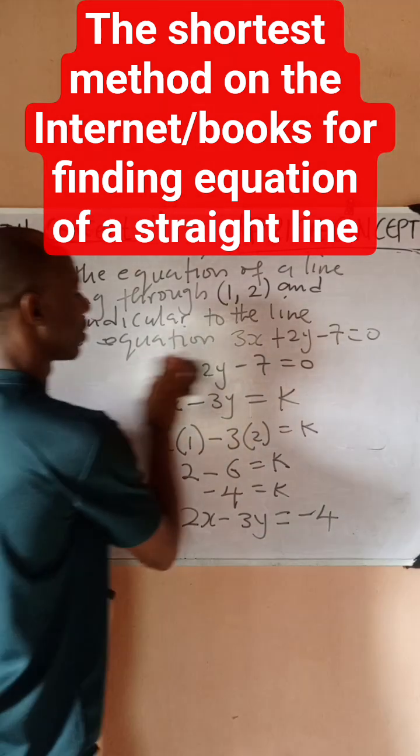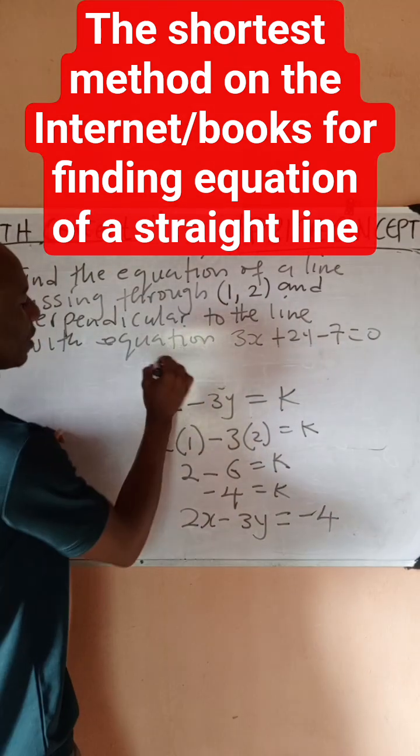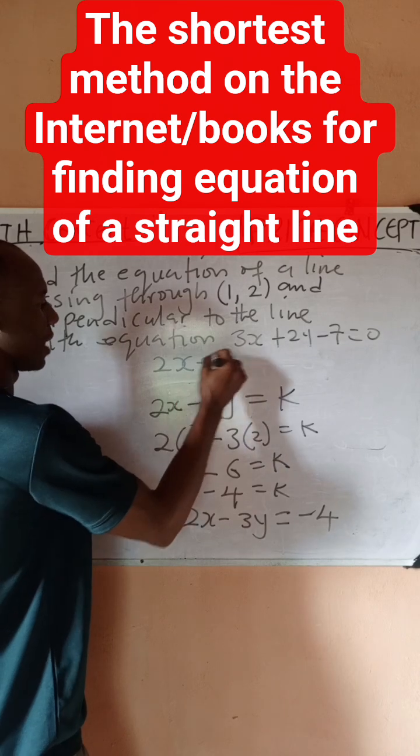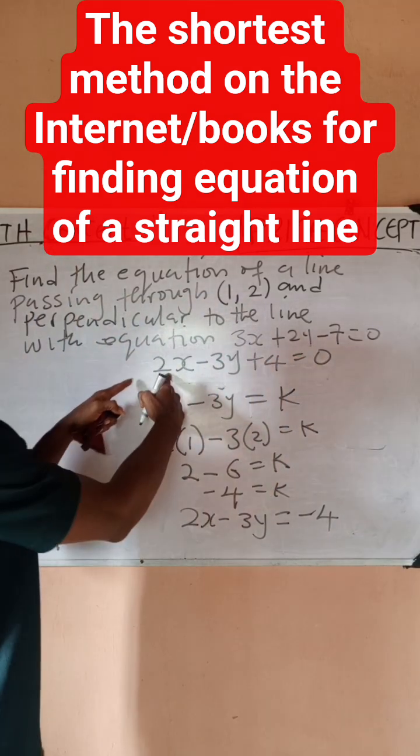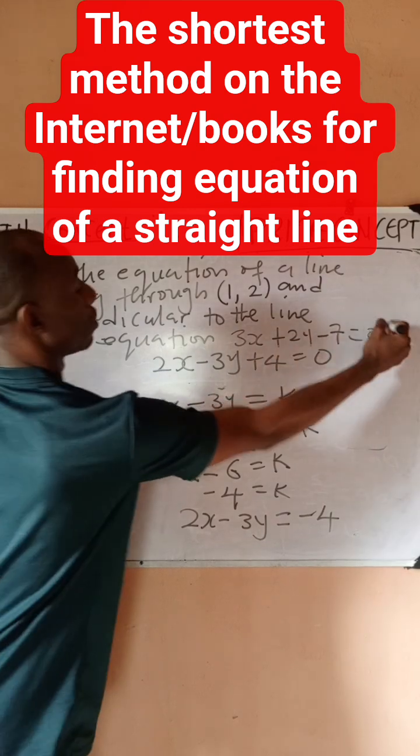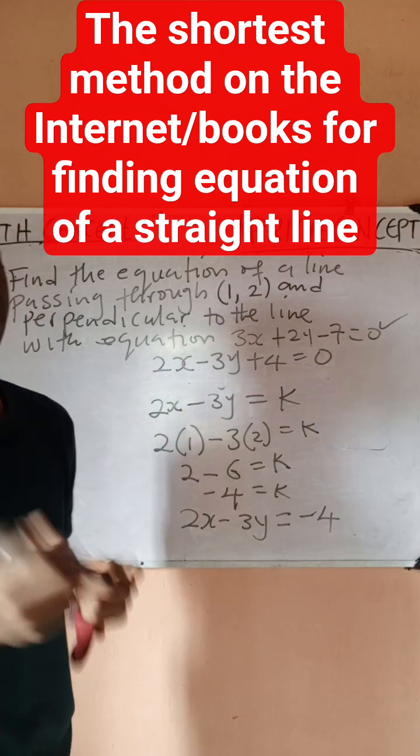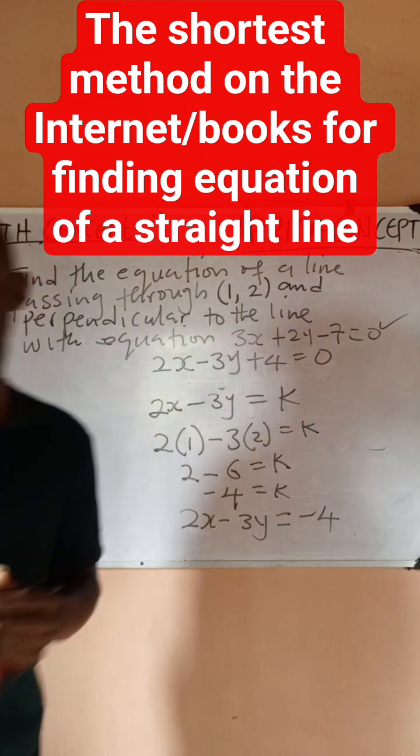I would then have that the equation of that line would simply be 2x - 3y + 4 = 0. So this is the equation of the line that is perpendicular to this line given to us. I believe this method is very clear. Thanks for watching Prime Concepts.